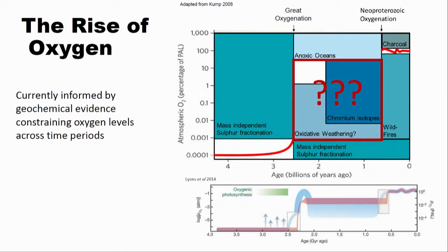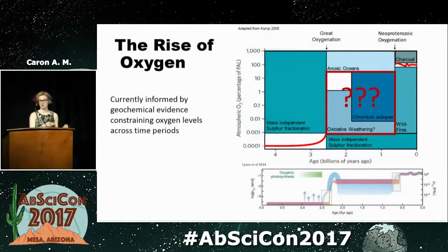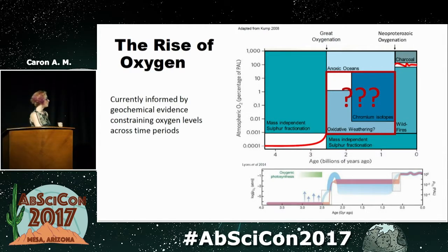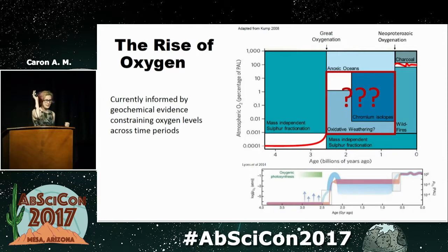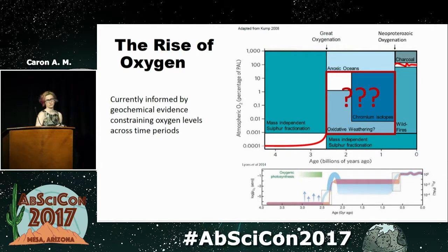So the rise of oxygen, as we currently understand it, is mostly informed by these geochemical proxies, like you just heard in the previous talk. Here are two figures briefly going over it. Oxygen levels in the early Earth were really low. They rose at the great oxidation event around 2.3, 2.4, and they might have risen and then crashed and stayed really low, or they might have risen to a small percent of modern and then rose again at the neoproterozoic oxygenation to approximately modern levels. But what happened in there is still a little bit controversial.